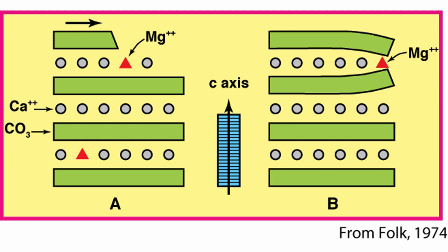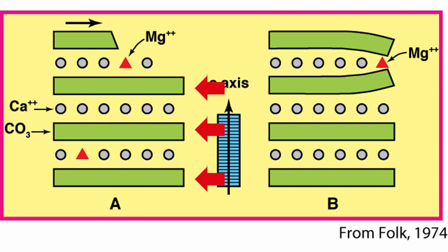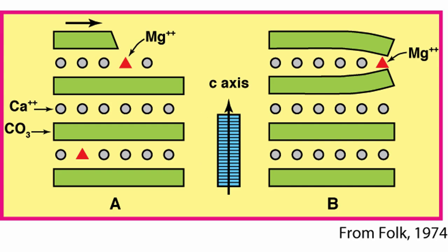Imagine that in situation A, you have a calcite or aragonitic mineral that forms. The mineral is like a salt, so you have a layer of carbonate — that's the green layer — and then a layer of metal ions: the little round gray sphere for calcium and the red triangle for magnesium. As long as you substitute magnesium for calcium into this structure at the middle of a mineral plate, it's not a problem. You have the green carbonate ions, then the calcium/magnesium ion layer, and because the magnesium is smaller than the calcium ion, there's a tendency of the carbonate layer to collapse a little bit around the magnesium.